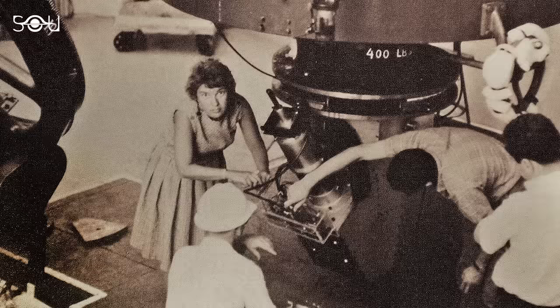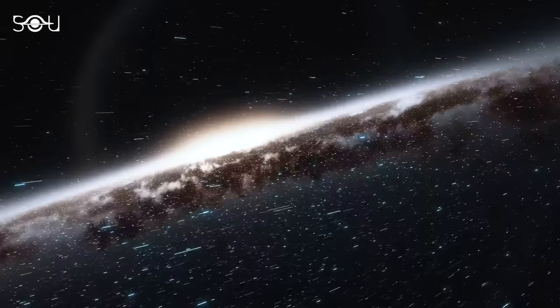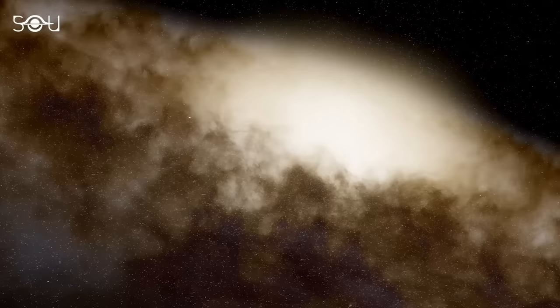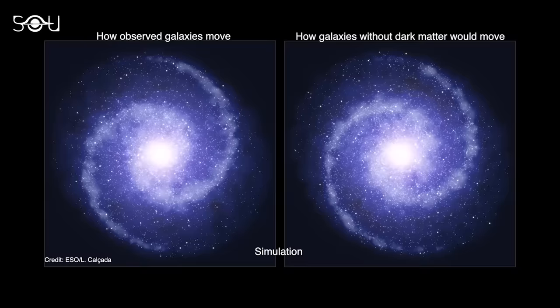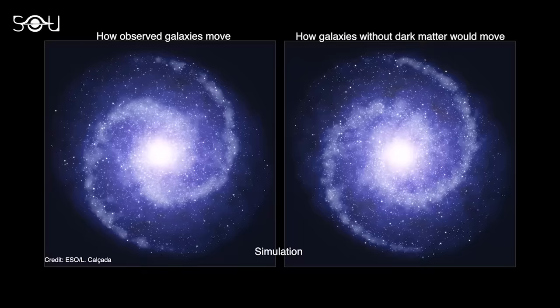However, Rubin and her colleague Kent Ford found that the stars in the galaxies did not obey such rules — in fact, it's the opposite. Almost all stars in the galaxies revolve around the center at increasing speed as the distance increases. They noticed that the outer regions of these galaxies were rotating at the same or increasing speed as the inner regions, which was unexpected based on the known distribution of visible matter. This seemed only possible if there was a significant amount of unseen matter in the galaxies. Just like Zwicky, they referred to it as dark matter.